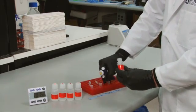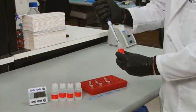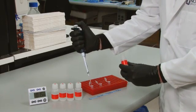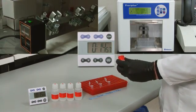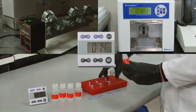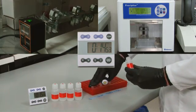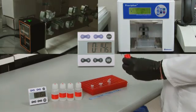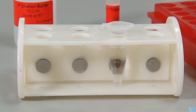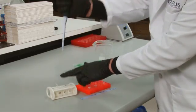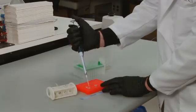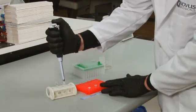Elute the complex from the beads by adding 200 microliters of IP dilution buffer and washing for 15 minutes at 4 degrees Celsius with rotation or agitation. Pellet the beads, keeping the supernatant and discarding the beads.